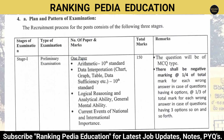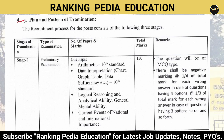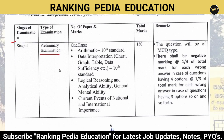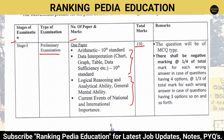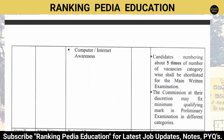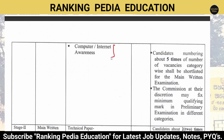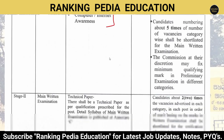The recruitment process consists of three stages. Stage one is the Preliminary Examination — one paper covering arithmetic, data interpretation, logical reasoning, current events of national and international importance. The total marks are 150, questions are MCQ type, and there is a negative marking of one-fourth of the total marks for each wrong answer.